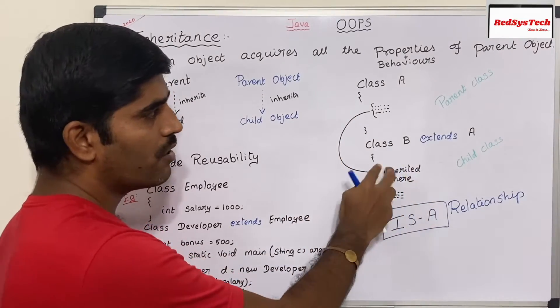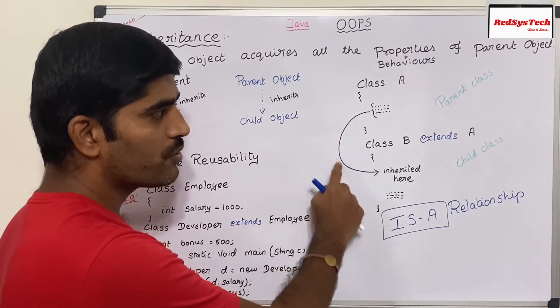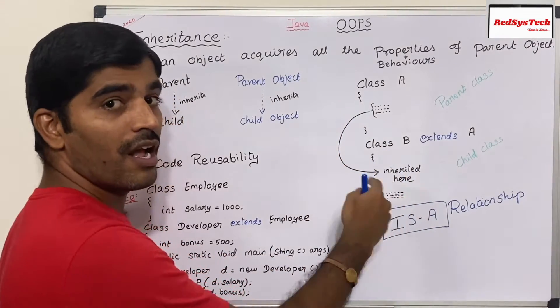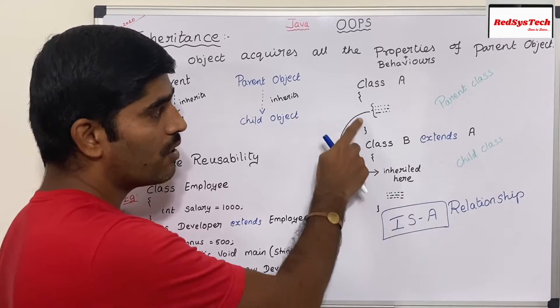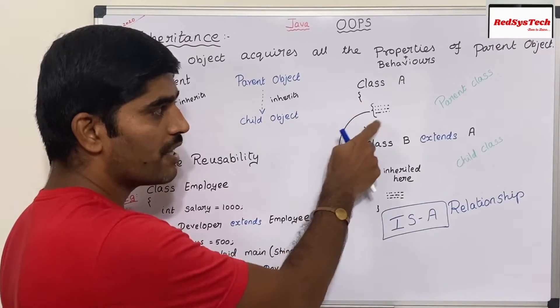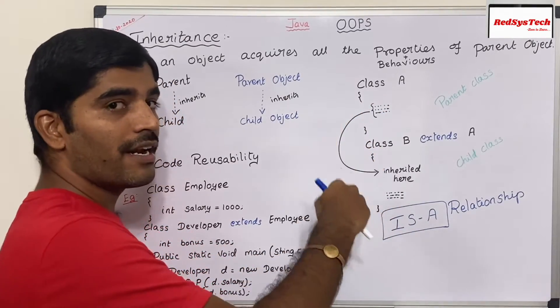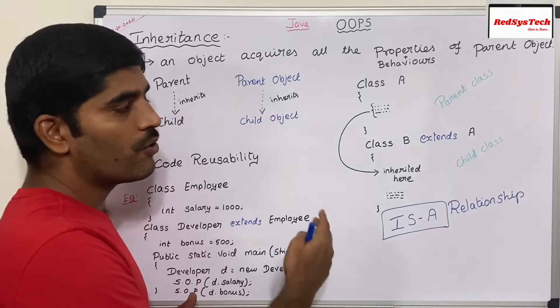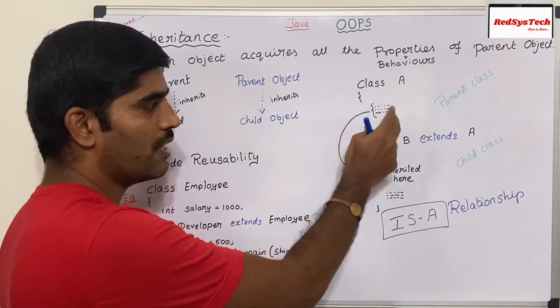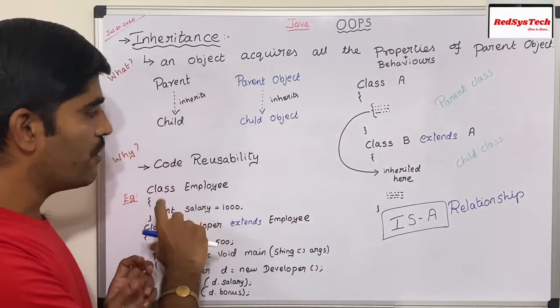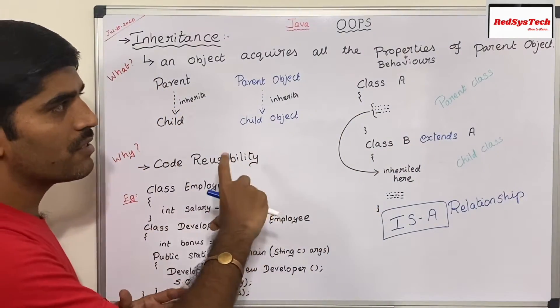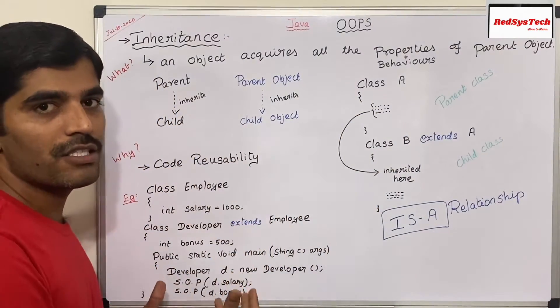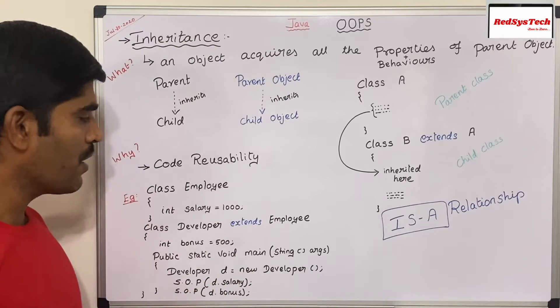Let's say I want this code to be used in class B, and similarly I want to use this particular logic in class C and class D as well. So in this case, I want to reuse this code — that is why we use the inheritance concept in Java.